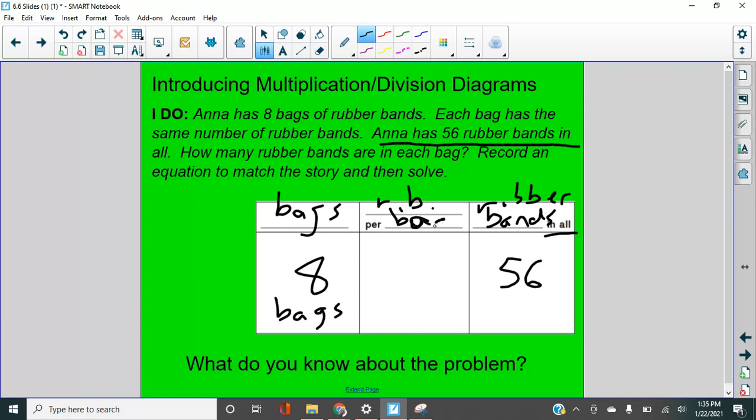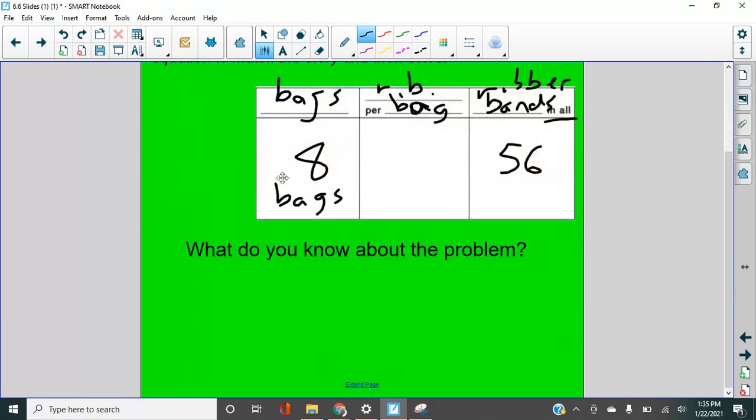What I need to figure out is how many rubber bands per bag there are, not per bug, per bag. So I'm going to write an equation. Let's get some room down here to do that. My equation is going to be eight times something. Okay. Let's put a question mark there because we'll see that sometimes. Eight times something equals 56.